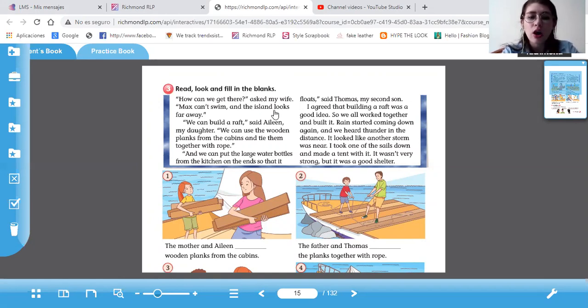We can use the wooden planks from the cabins and tie them together with rope. And we can put the large water bottles from the kitchen and the ends so that it floats, said Thomas, my second son. I agreed that building a raft was a good idea. So we all work together and build it.